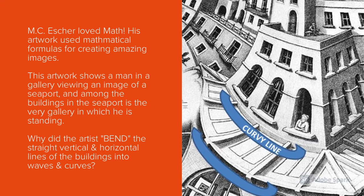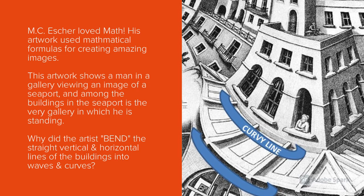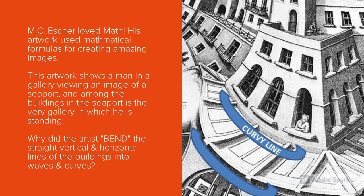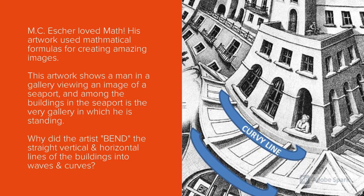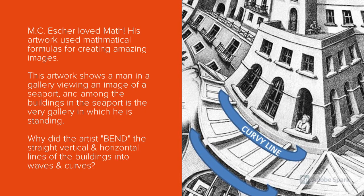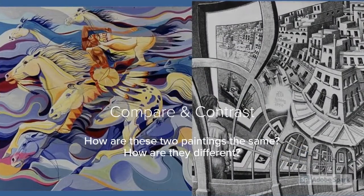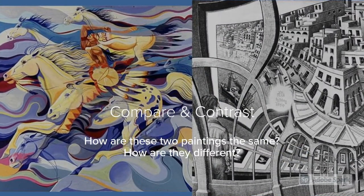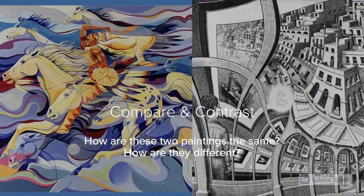This artwork shows a man in a gallery viewing an image of a seaport, and among the buildings in the seaport is the very gallery in which he is standing. Why did the artist bend the straight, vertical, and horizontal lines of the building into waves and curves? Compare and contrast these two images.